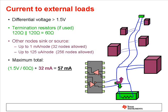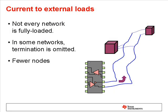For a fully loaded bus with standard parallel termination, the external load current should be less than 60 milliamps. For networks with fewer nodes or with less termination, the load current can be much less.